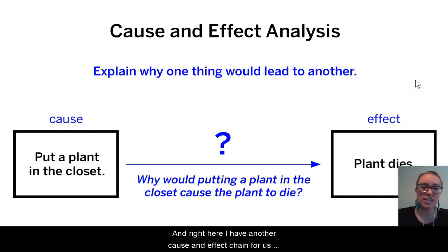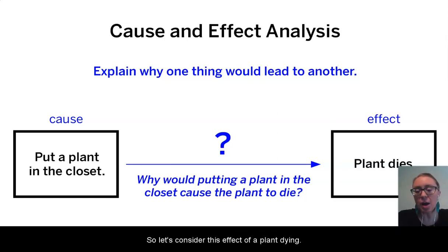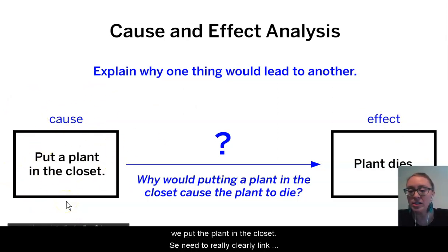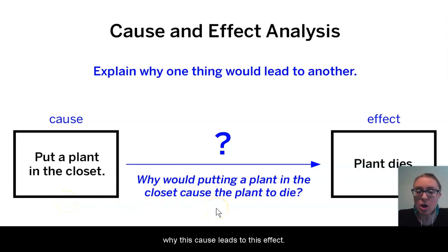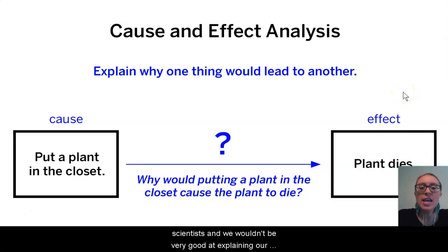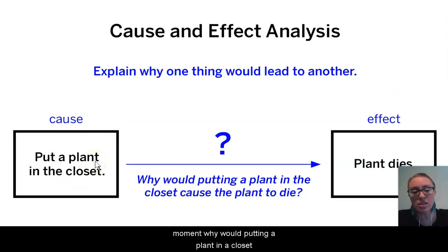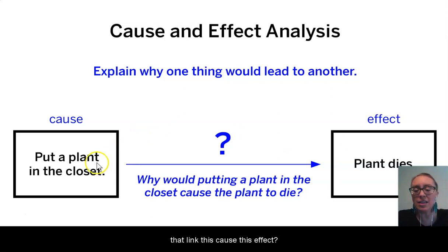Right here I have another cause and effect chain for us to consider and practice — the link between an event and an outcome, as we're going to need to do this in our explanation to the Econauts today. Let's consider this effect of a plant dying, and the cause of that effect: we put the plant in the closet. We need to really clearly link why this cause leads to this effect, even if it feels obvious. We wouldn't be very good scientists if we didn't make that link very clear. Think about why putting a plant in a closet would cause that plant to die, and what are all of the specific steps along the way that link this cause to this effect.